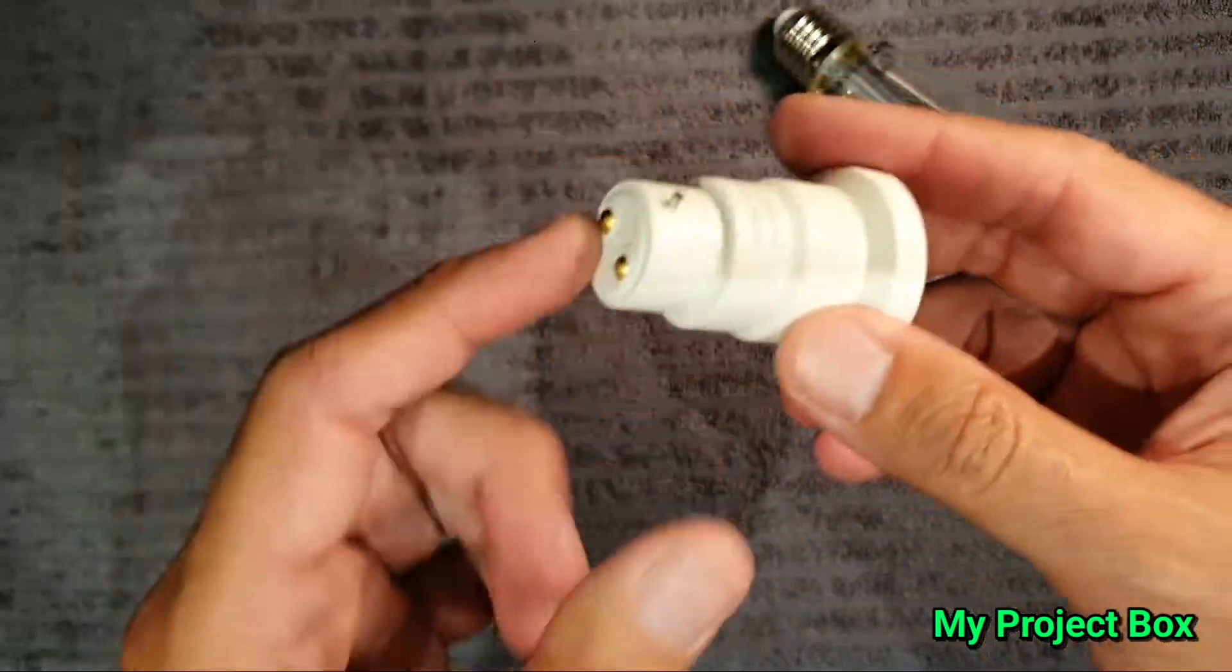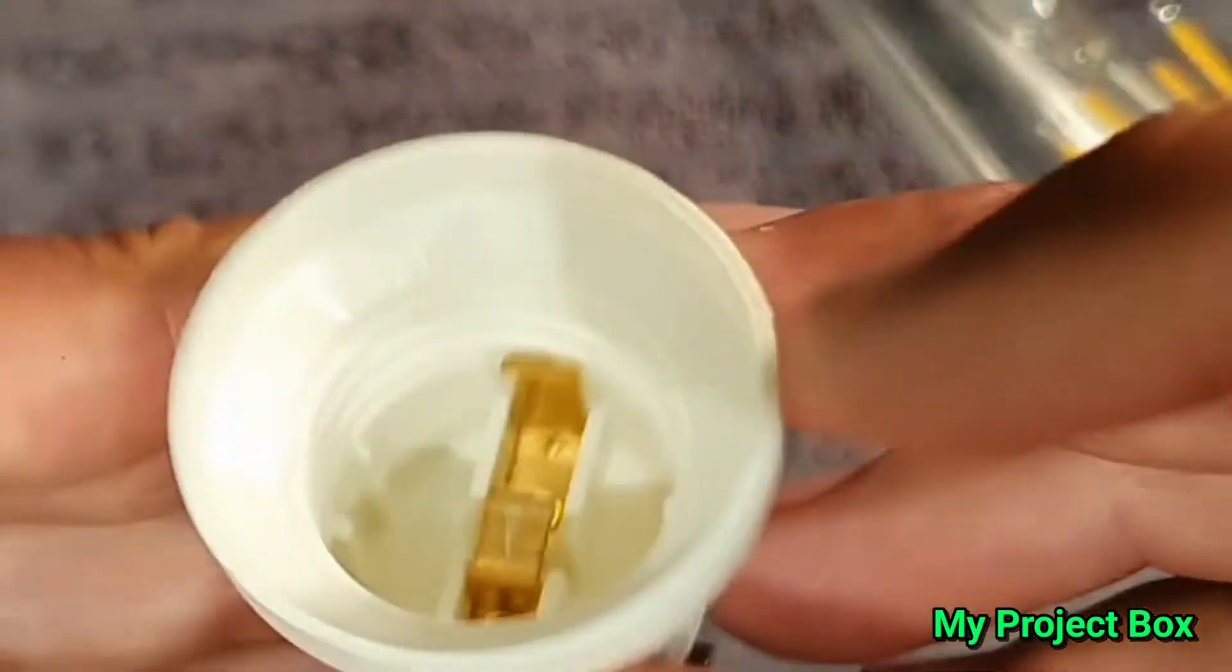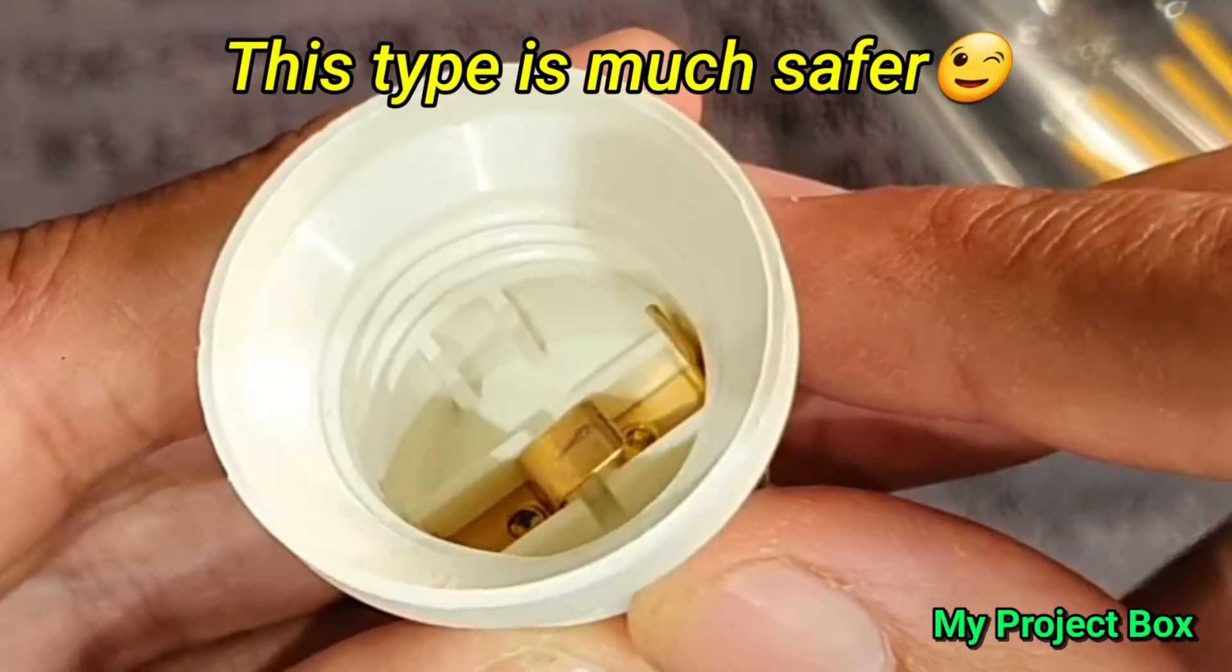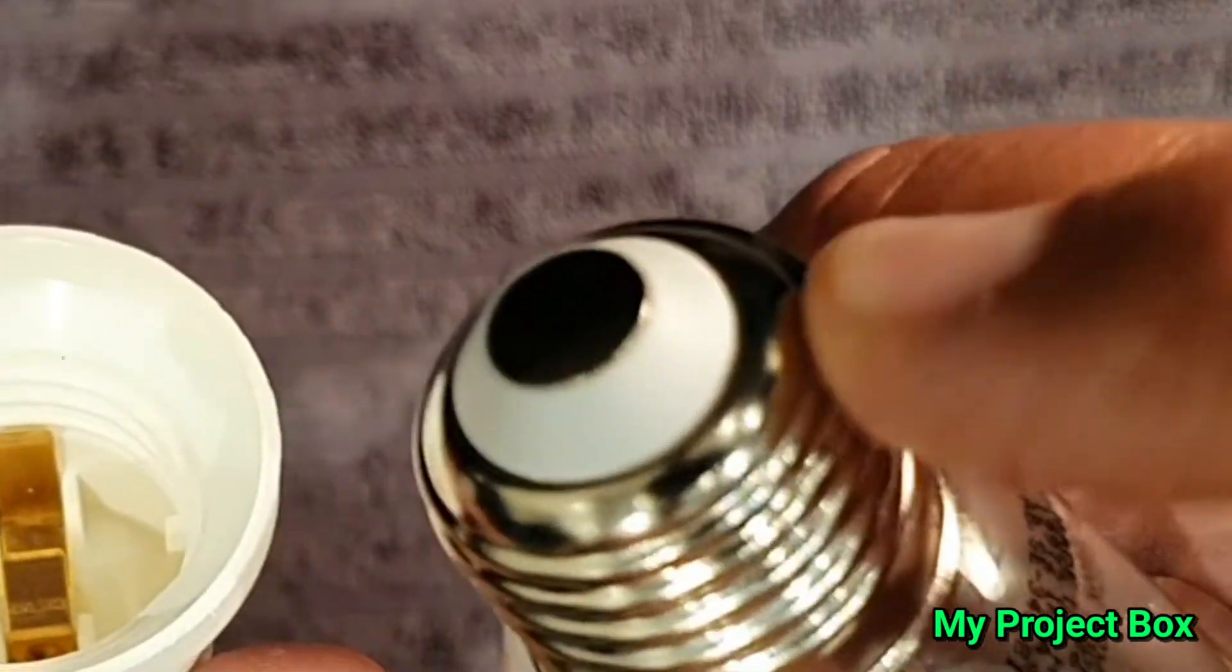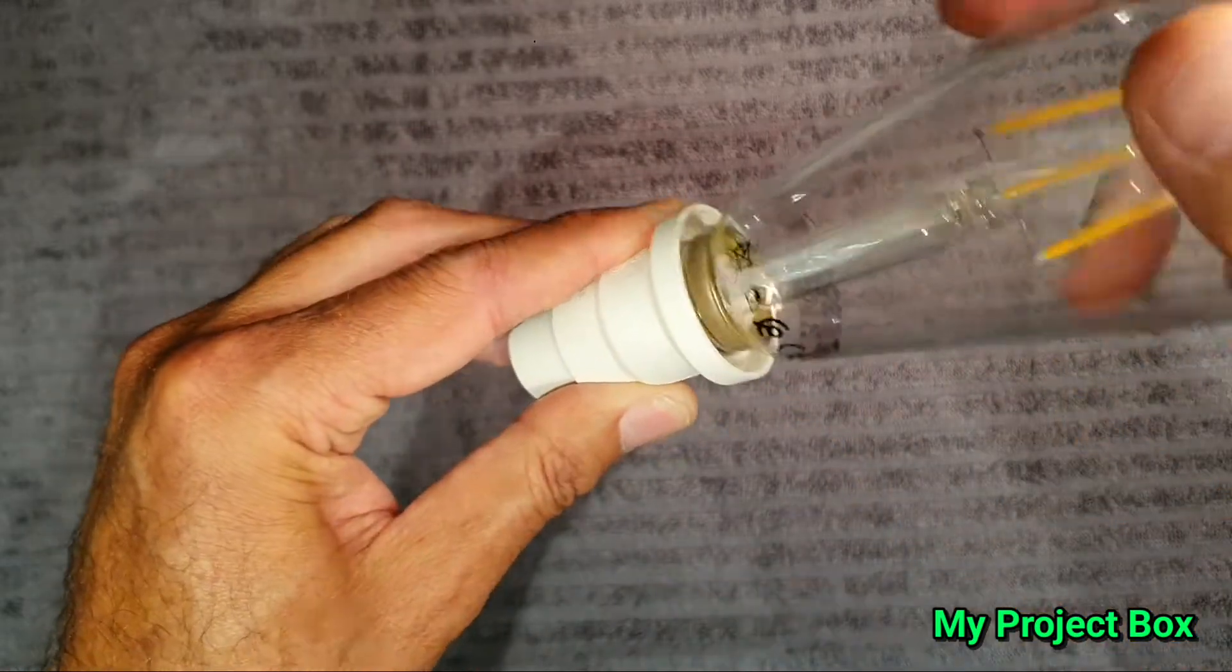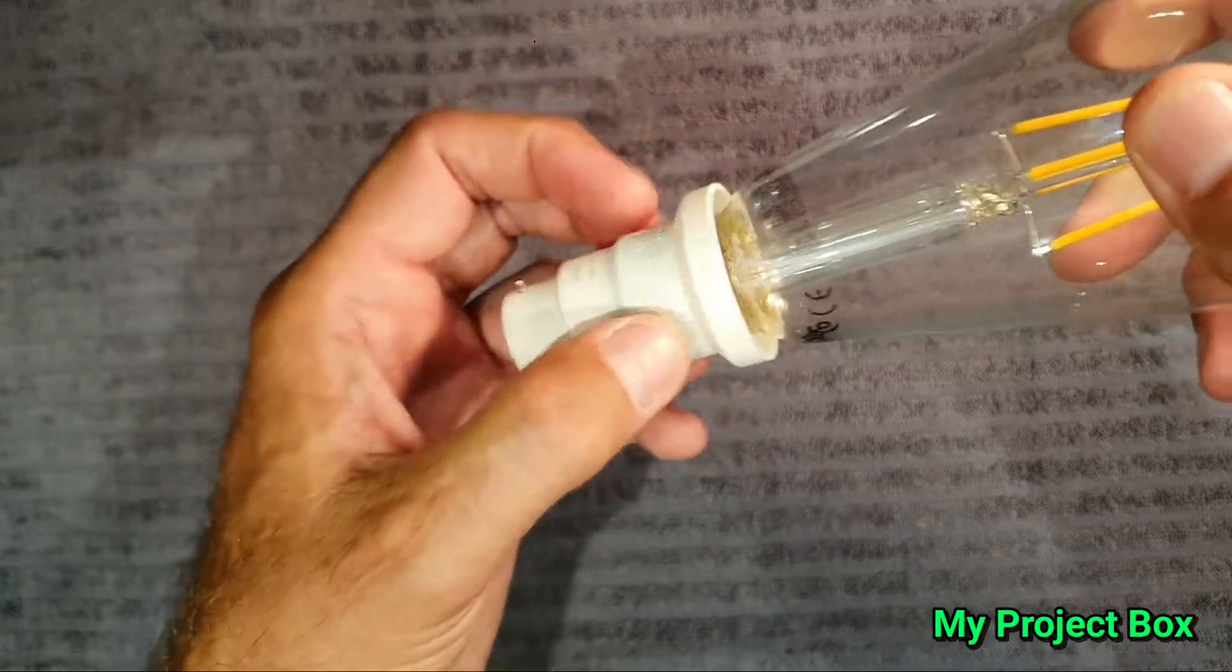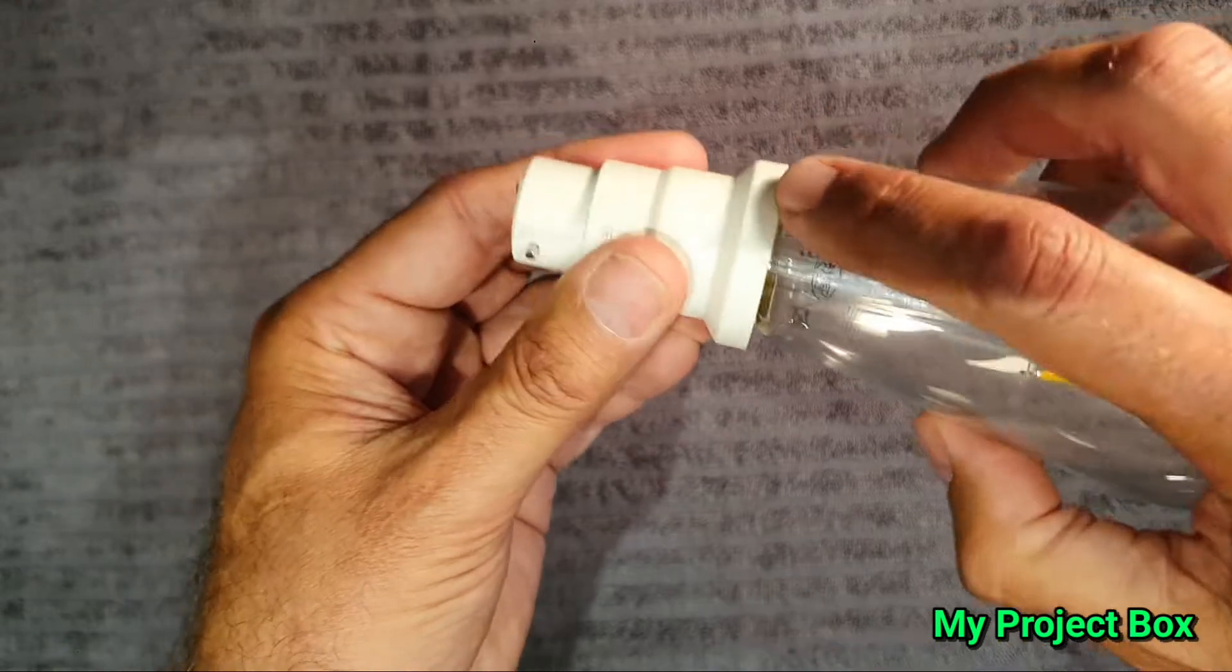Now what makes this adapter a bit safer is what they've done is they've actually made the threads plastic and they've put just a small little connector plate at the bottom that only makes connection with this bit here. So now as you start screwing it in, it makes no electrical connection to the metal bit until it reaches the bottom and then the shroud covers the entire bit of metal.